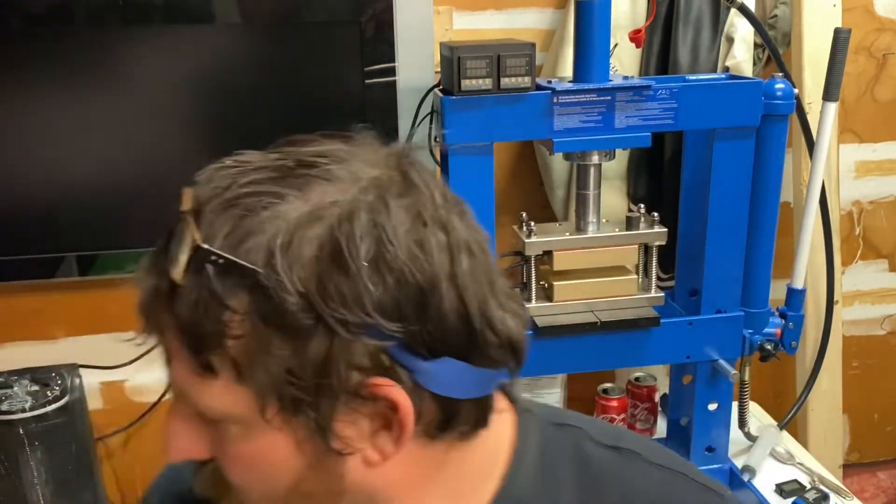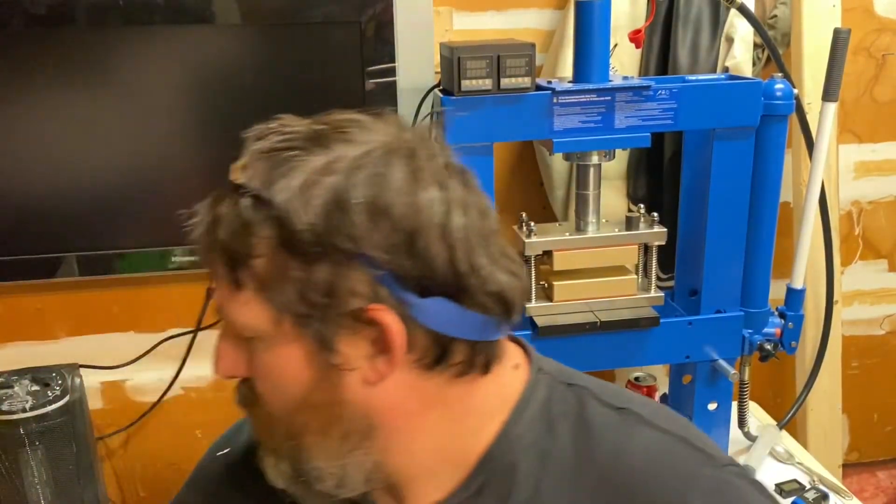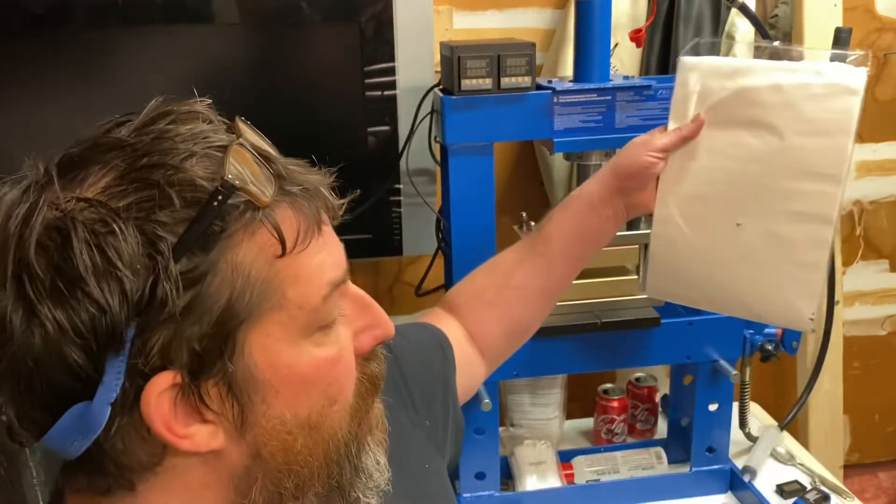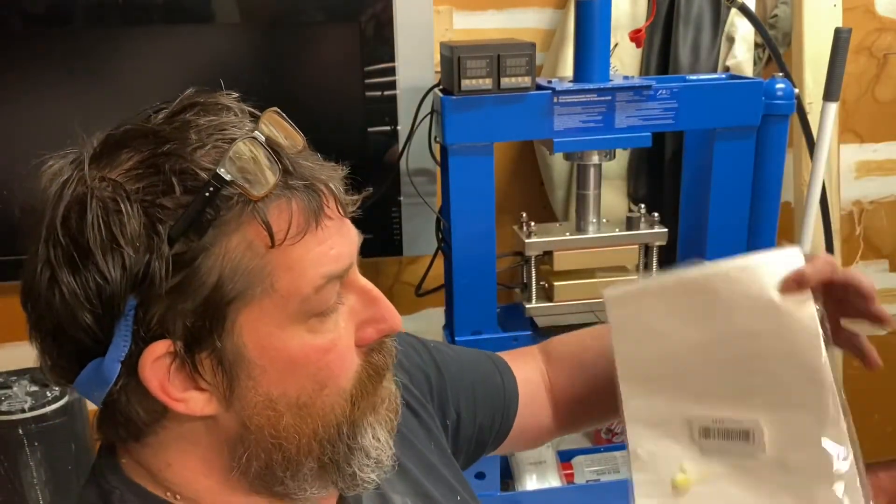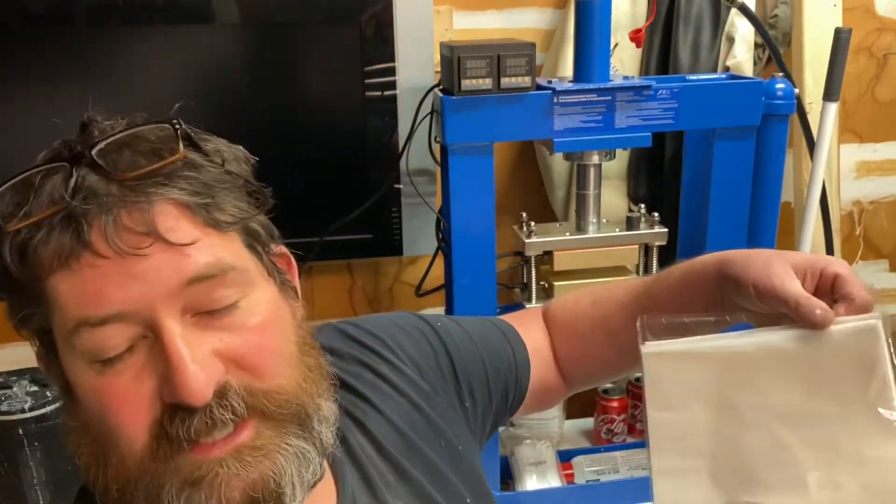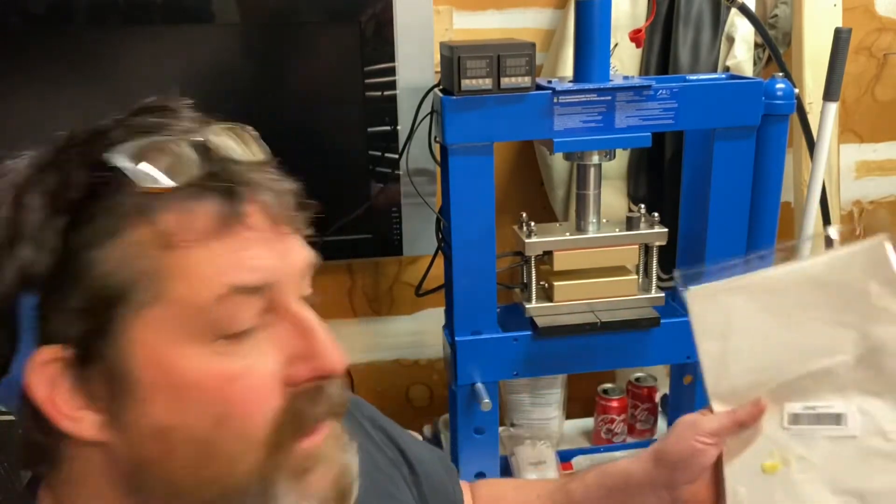And then I ended up getting these off of Amazon. They're pre-cut parchment paper. There's 100, I think it was $7. So I bought a couple packs of those. Cheap, easy. I don't have to cut them up. They're already pre-cut.